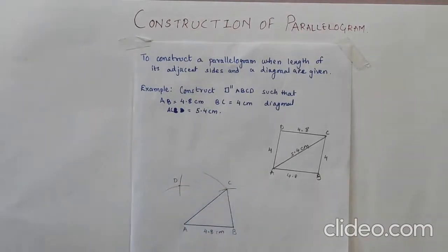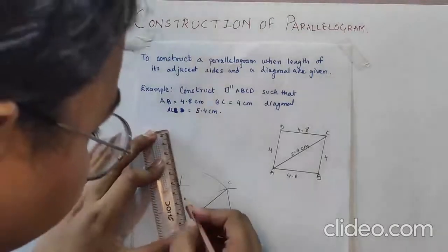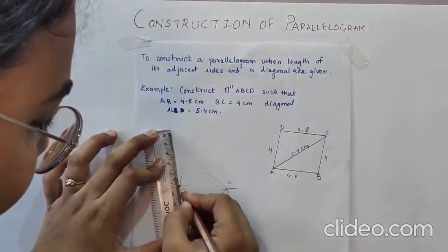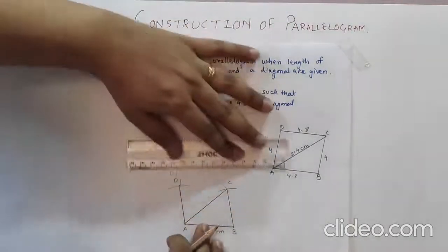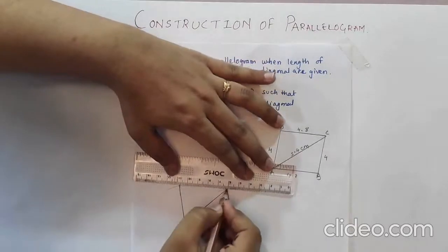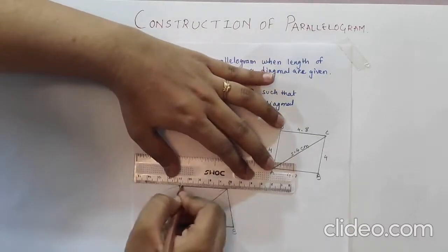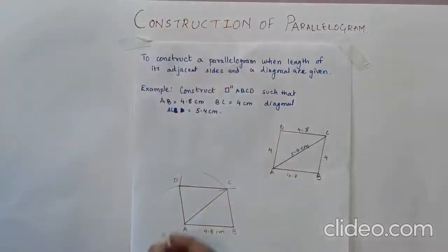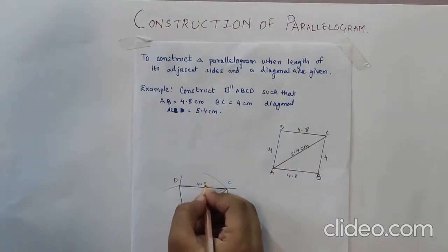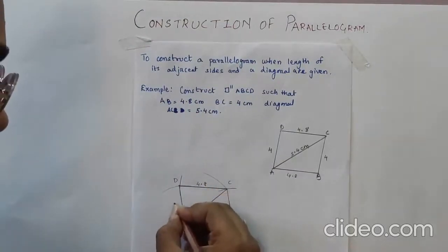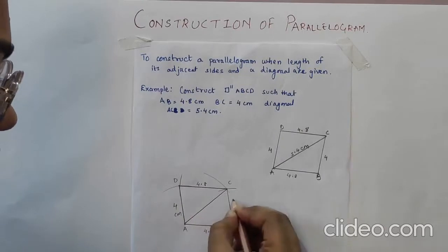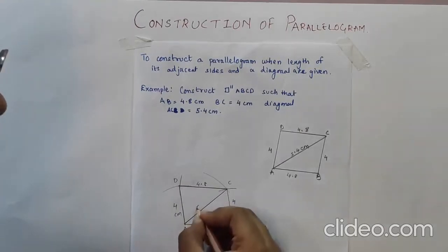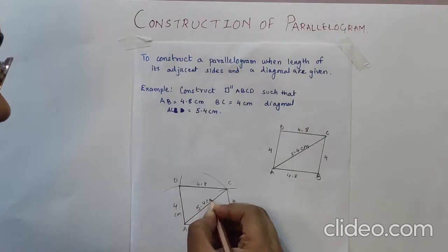Now we have to join AD and name the remaining elements. And this is our required parallelogram A, B, C, D.